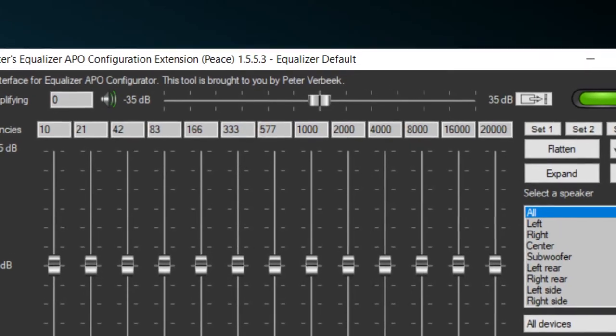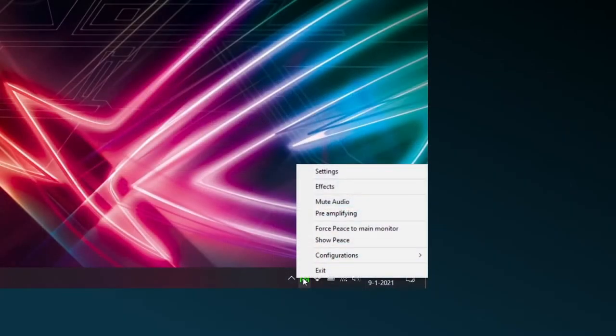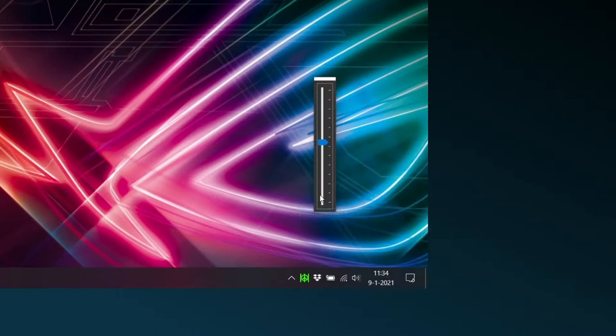For pre-amplifying the sound, you use this slider. It's the same as the one in the Peace menu of the Windows system tray.